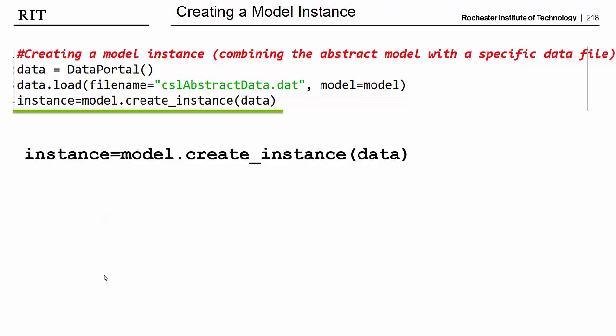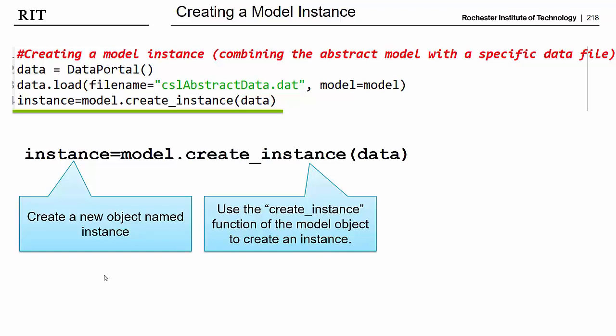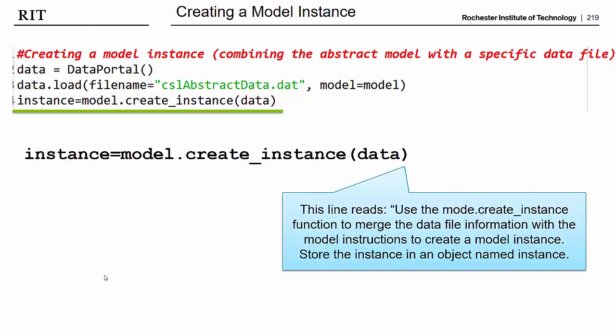And then finally, this last of three lines creates our model instance. So it starts off by saying, hey, create a new object and let's name it instance. And then we're using the create_instance function of our model object. And this create_instance function takes a data portal object. So we've given it our data portal object, which we named data. And prior to creating the instance, we have to make sure that we loaded the data into this data portal object, which is what we did in the previous line. So this line, if you were to translate it into words, says basically, use the model.create_instance function to merge the data file information with the model instructions to create a model instance. And let's store this instance in an object that we're naming instance.